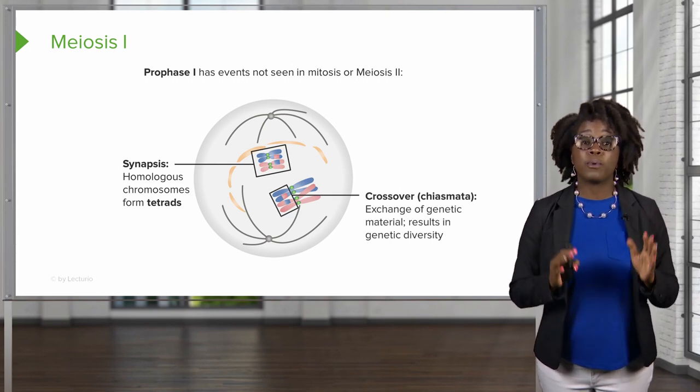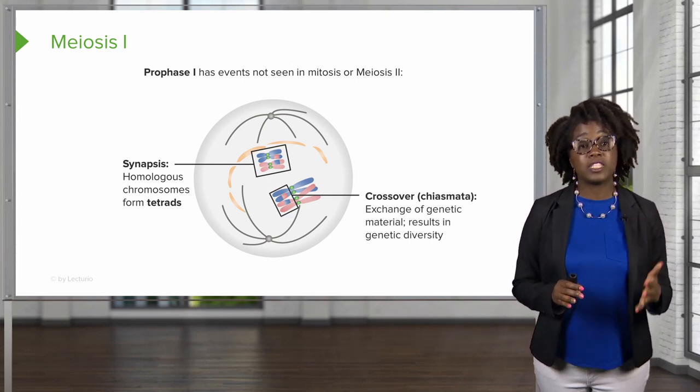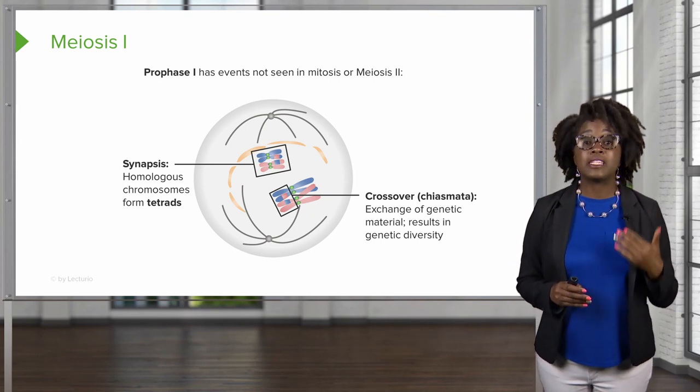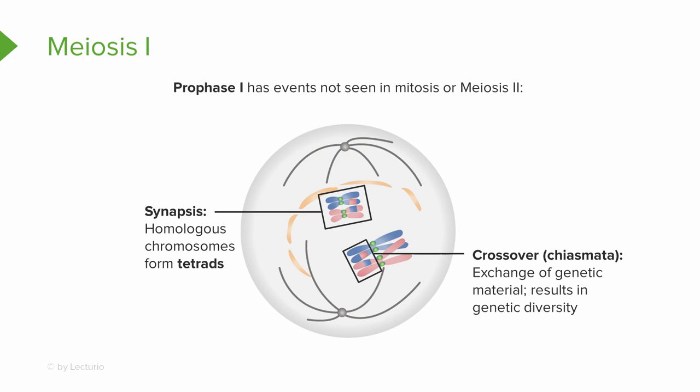Another process in prophase I that we do not see in mitosis is crossing over, or chiasmata. This involves the exchange of genetic material between the male and female chromatids, so that you get a little piece of the male on the female chromatid and a little piece of the female on the male chromatid. This results in a unique chromosome that is a mixture of both maternal and paternal chromosomes, so by the end of prophase I the chromosomes are already beginning to be genetically distinct.